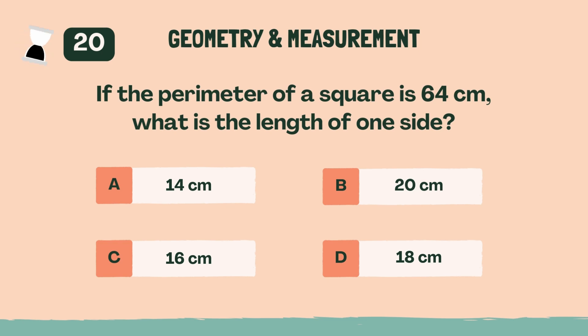If the perimeter of a square is 64 centimeters, what is the length of one side? C, 16 centimeters.